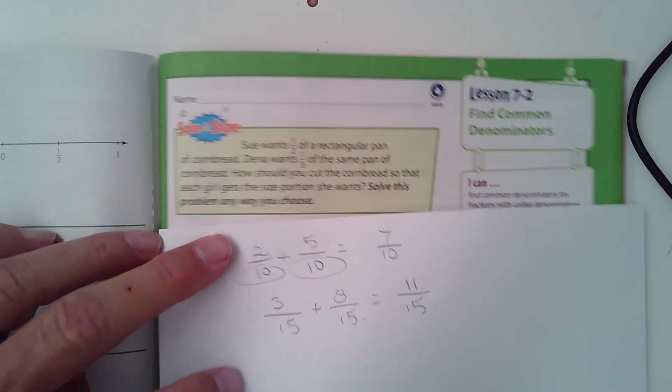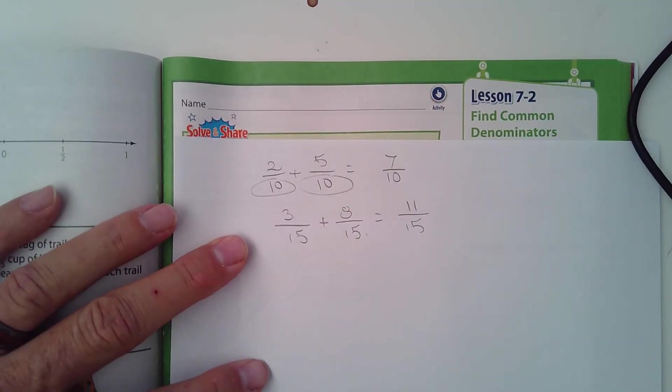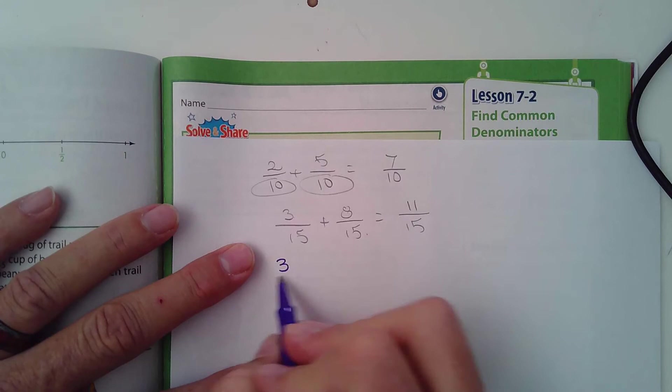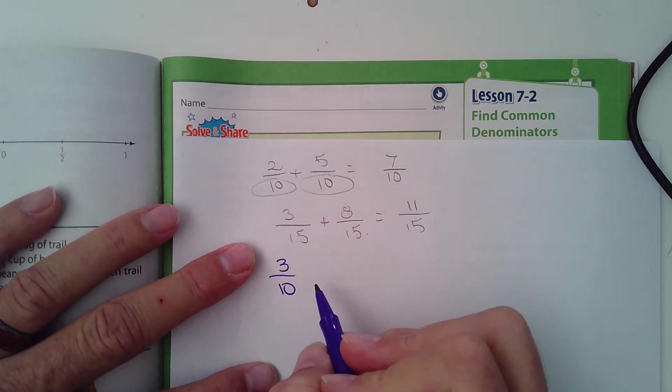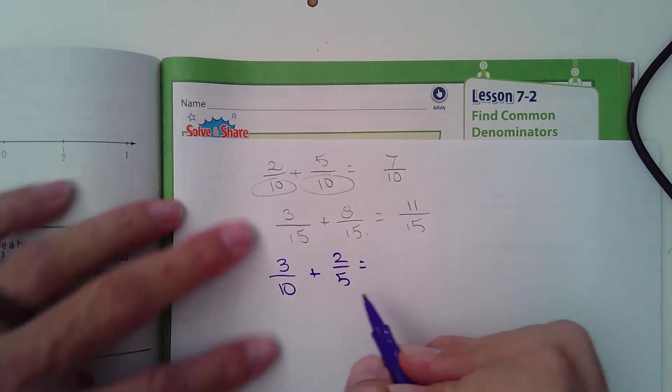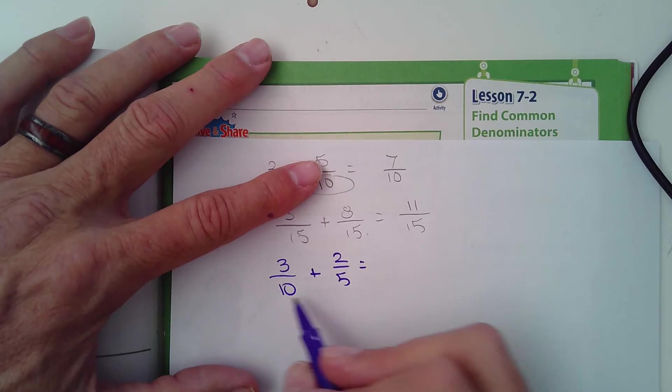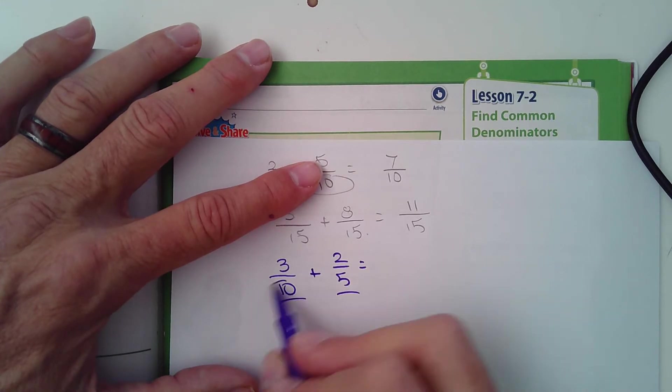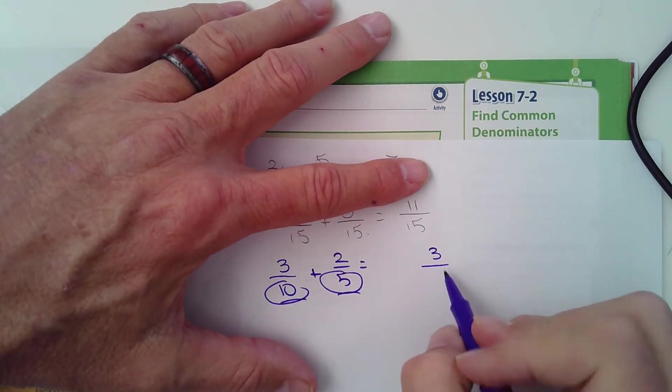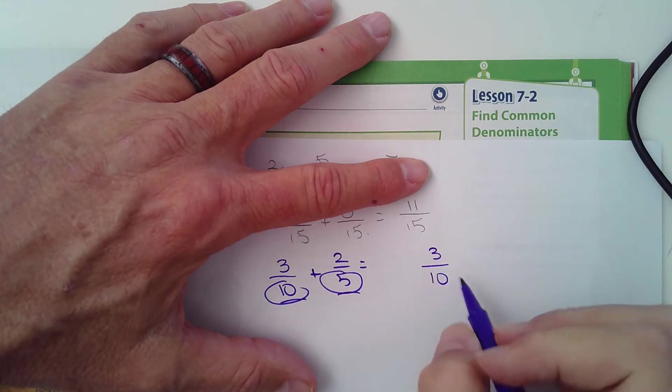Now we get into problems when we have fractions we're adding and they don't have the same denominator. For example, what if I had 3/10 and I'm adding, let's say, 2/5? Can I do that? No, I can't. The denominators not the same. They need to be the same. I'm sort of the old-fashioned way, and the way you might end up doing a lot of these, I just kind of line them up vertically.